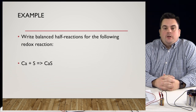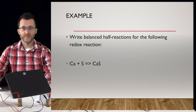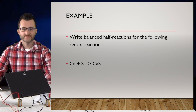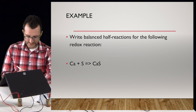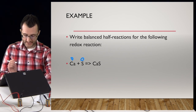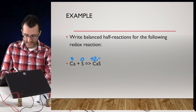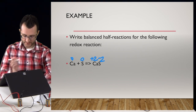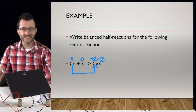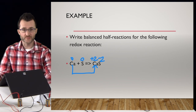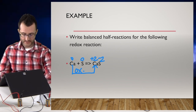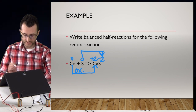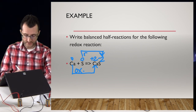We have an example: write balanced half-reactions for the following redox reaction. Ca and S are both elements, so both are zero. In the compound, Ca is plus two and S is minus two. Ca goes from zero to plus two — oxidation number is increasing, losing electrons, that's oxidation. S is going from zero to negative two — gaining electrons, so that is reduction.